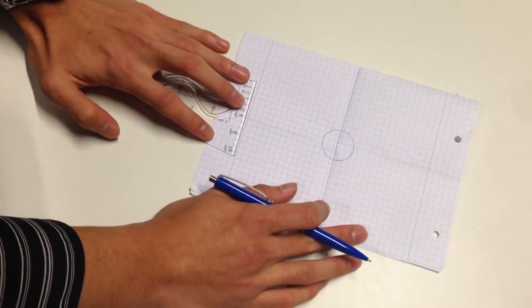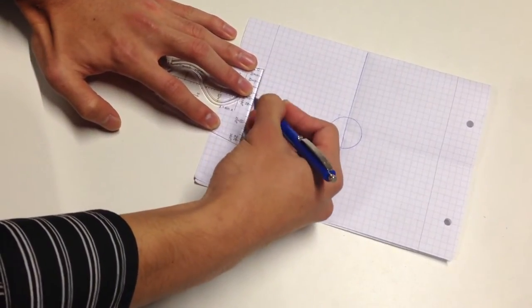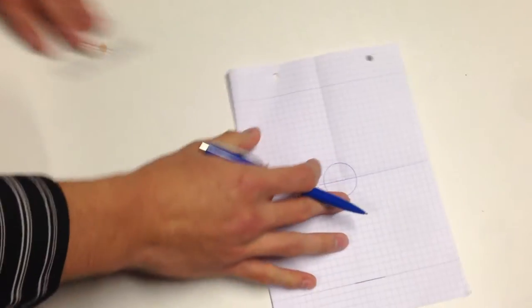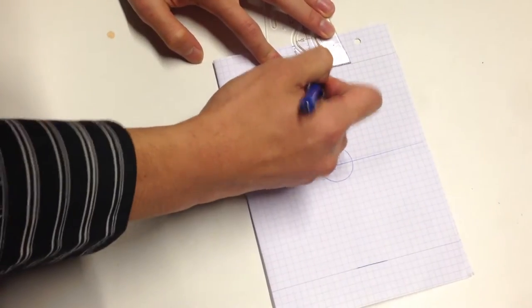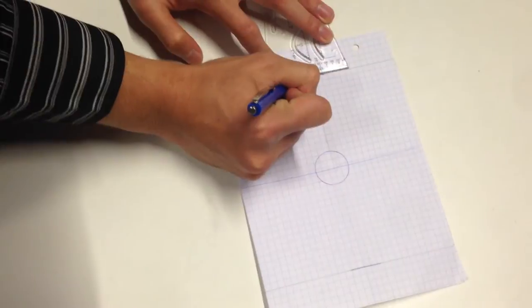You also have to make some goalie here for like two and a half inches, I mean centimeter. And this is also two and a half centimeter. So from here to here.